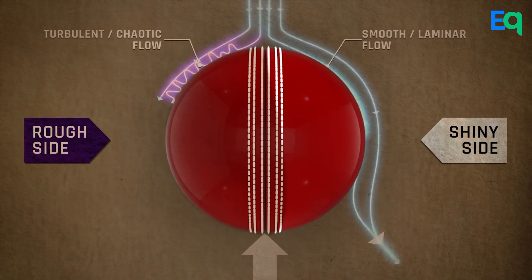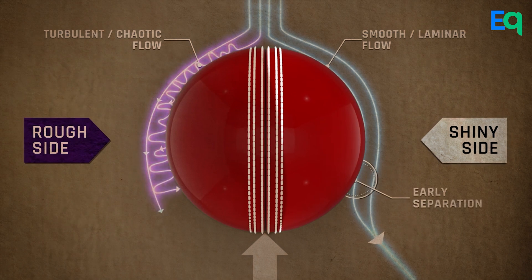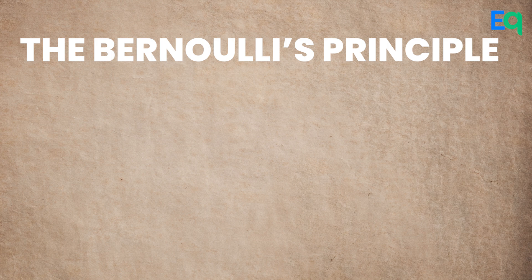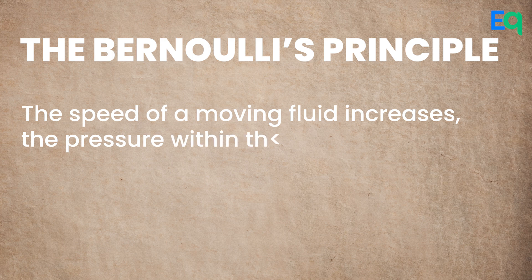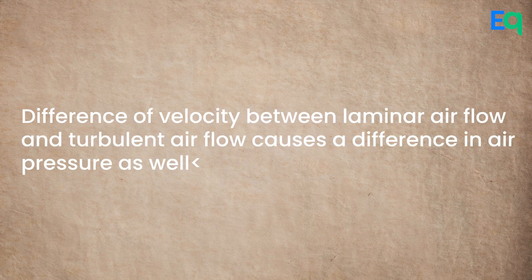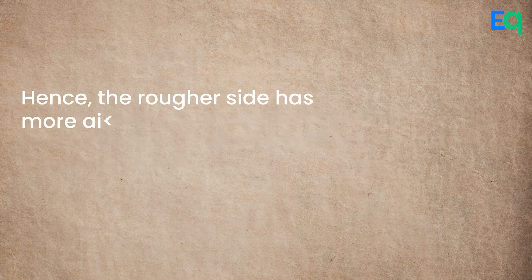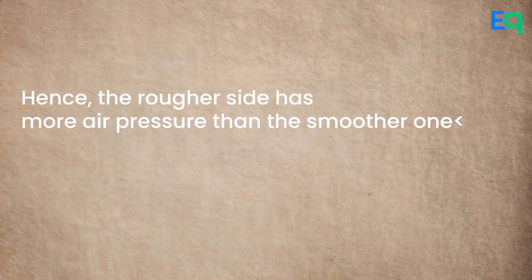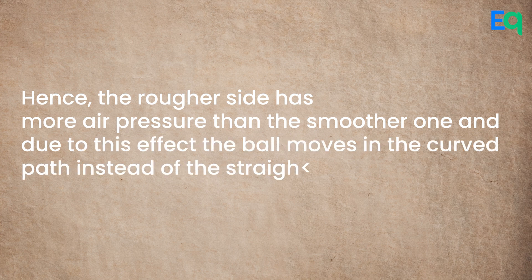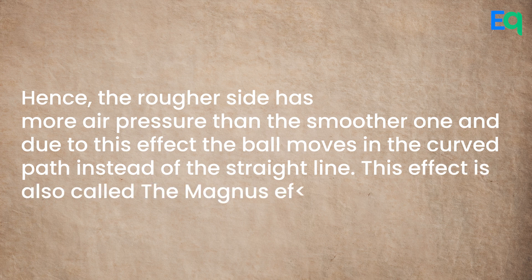The velocity of the laminar airflow is more than the turbulent airflow, and here comes Bernoulli's principle. Bernoulli's principle states that as the speed of a moving fluid increases, the pressure within the fluid decreases. Therefore, the difference of velocity between laminar airflow and turbulent airflow causes a difference in air pressure as well. Hence, the rougher side has more air pressure than the smoother one, and due to this effect, the ball moves in a curved path instead of a straight line. This effect is also called the Magnus effect.